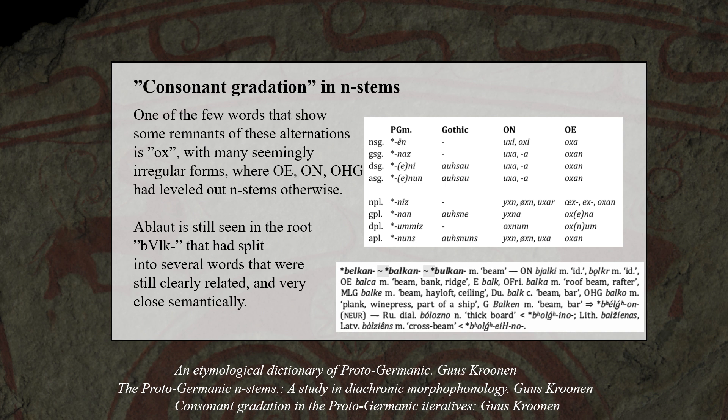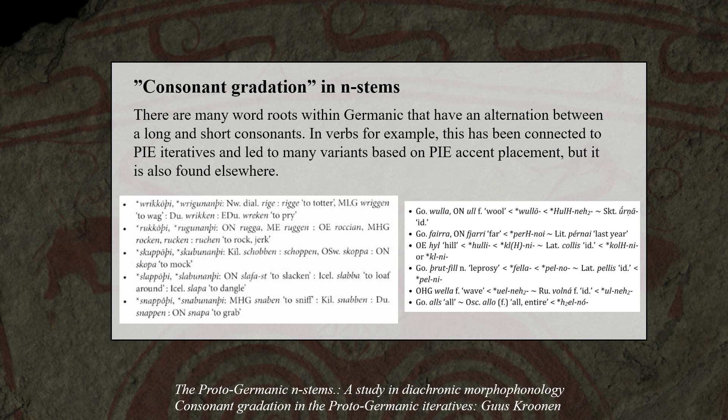There are also some remnants of ablaut seen in for example related roots of semantically similar words that used to be inflectional forms of the same word. According to Sjöskronen, there are actually remnants of these alternations within Germanic that point to there being a complex system in Proto-Germanic.